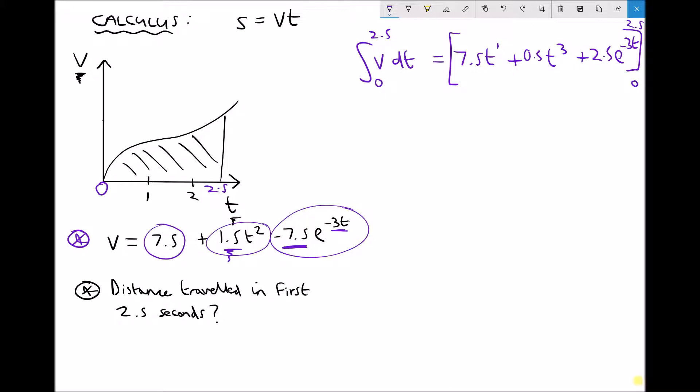So to evaluate this integral, we need to find the value of the square bracket when t equals 2.5 and then we need to subtract the value of the square bracket when t equals 0. So let's do that now. We have 7.5 times 2.5 plus 0.5 times 2.5 cubed. All I'm doing is replacing t here with 2.5 and t here with 2.5. And then for our third term, we have 2.5e to the minus 3 times 2.5.